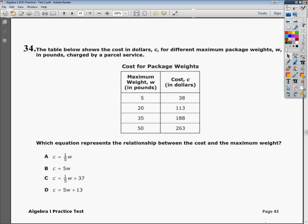The question says, the table below shows the cost in dollars for different maximum package weights in pounds charged by a parcel service. Which equation represents the relationship between cost and maximum weight? Now, the way they probably think you're going to do this is to do a linear regression, and we'll do that in a second. But it's a multiple choice question, so why wouldn't you use that to your advantage?